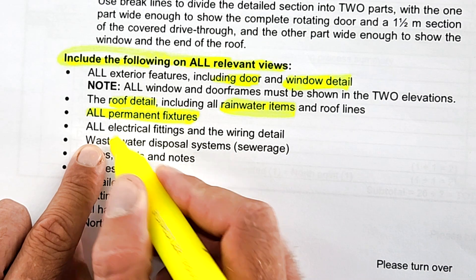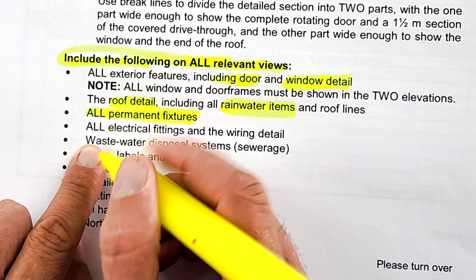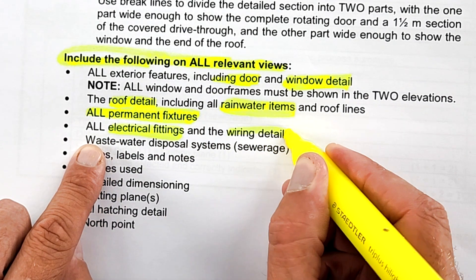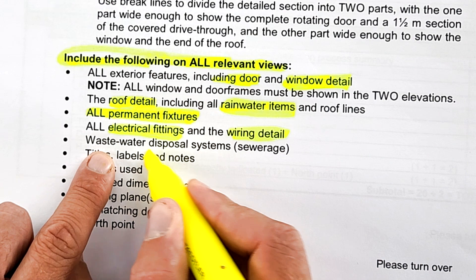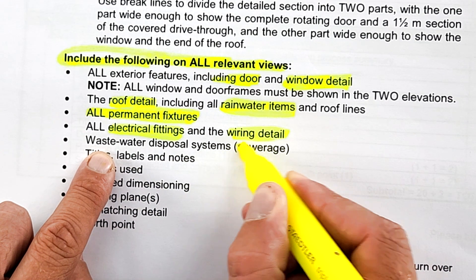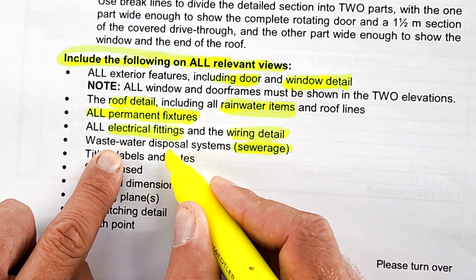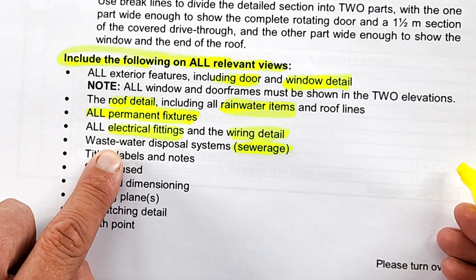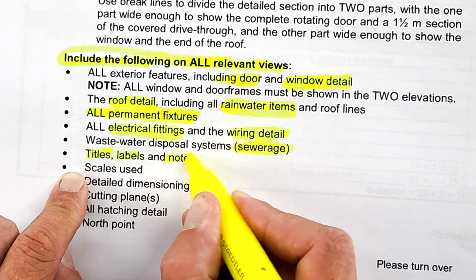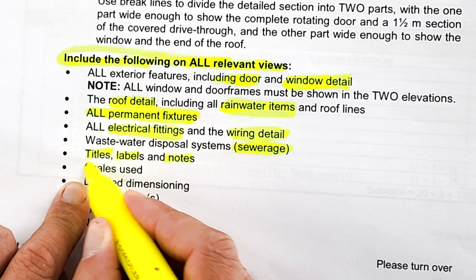All electrical fittings and wiring detail. We'll look at examples of all of this. Your wastewater disposal system—in other words, your sewer—how do you get your sewer from the building to the actual main sewer.